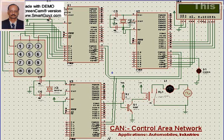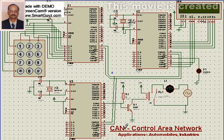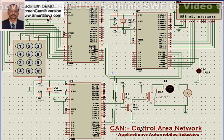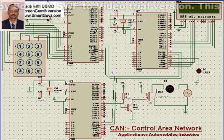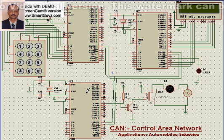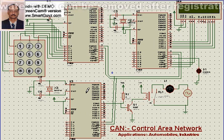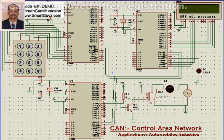We shall now see how a Control Area Network, in short called CAN, is used in automobiles like cars and industries. As the name implies, control area network means that controllers — microcontrollers — are connected in a network, like computers connected in a network, and exchange data or information amongst themselves.